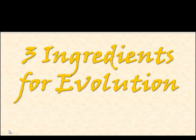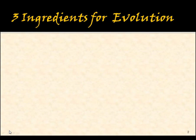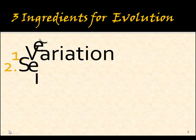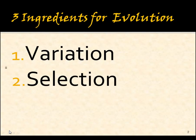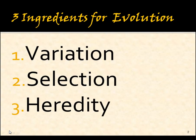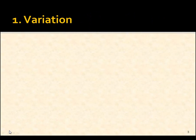Let's talk about three things that you need for evolution — the three ingredients for evolution. The three ingredients are variation, selection, and heredity. Remember these. I'm going to hit these a lot. Variation, selection, and heredity.